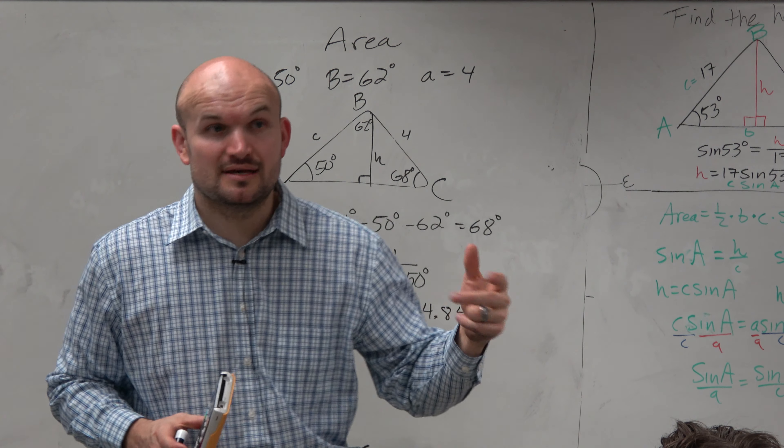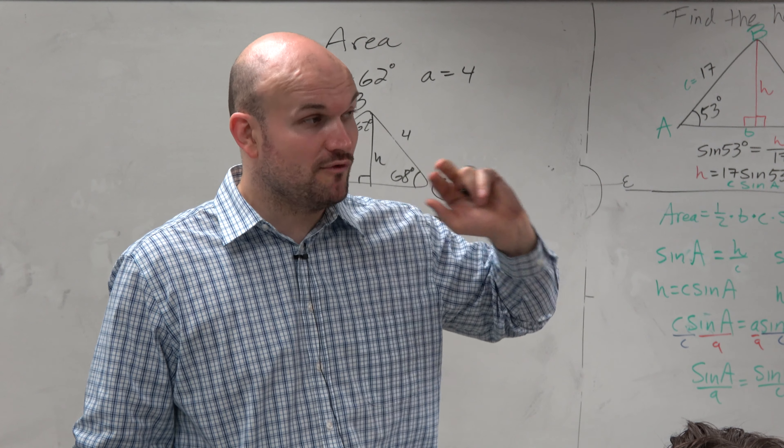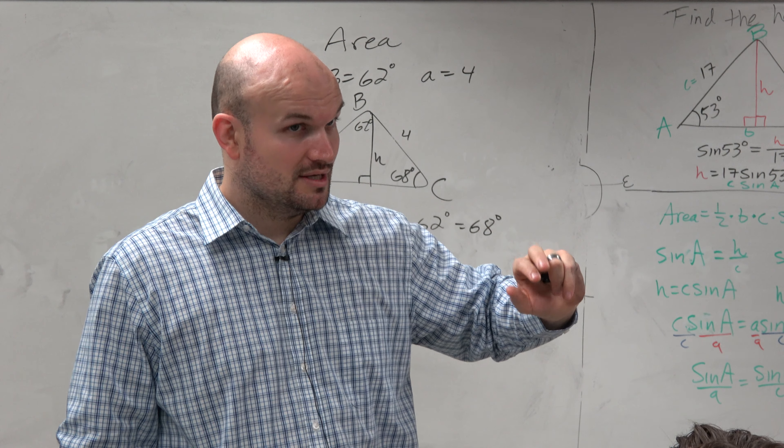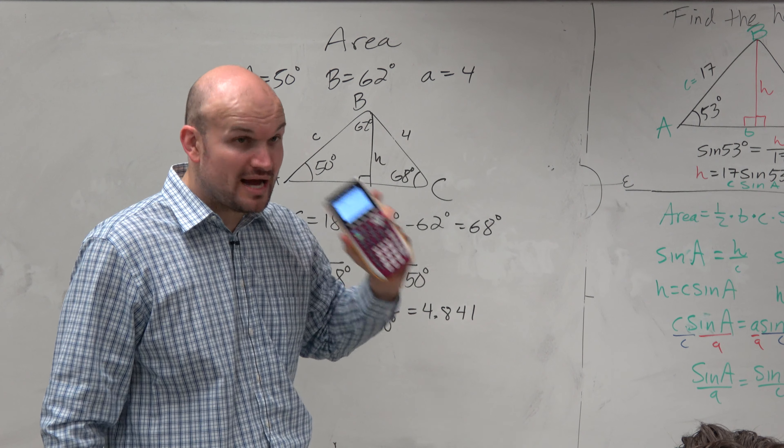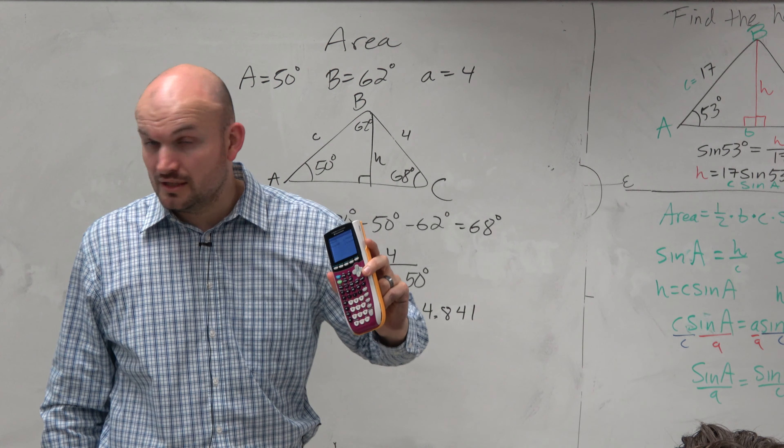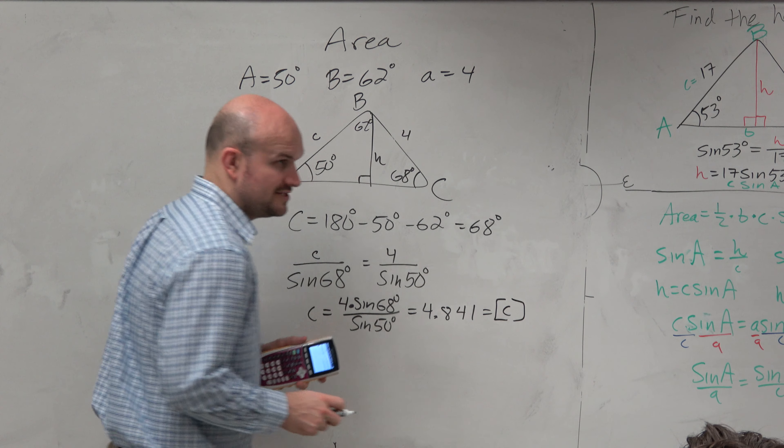this is rounded to the nearest thousandth. Remember, we're going to use this in a formula, right? I don't want to use this answer. I've got to use all the digits. I do not want to use a rounded answer, correct? So there's a couple ways you could do this. You could store this as alpha C if you'd like to.